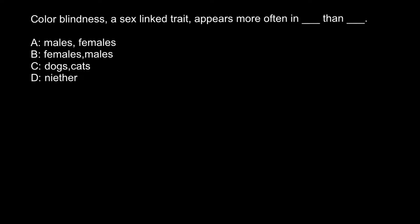Colorblindness is an X-linked trait. I will use red color to designate the chromosome with the defective allele that codes for the specific protein participating in the normal biological pathway which results in normal color vision. If this protein is mutated, it leads to a genetic disorder, and people who have this allele can either be carriers or can be affected.